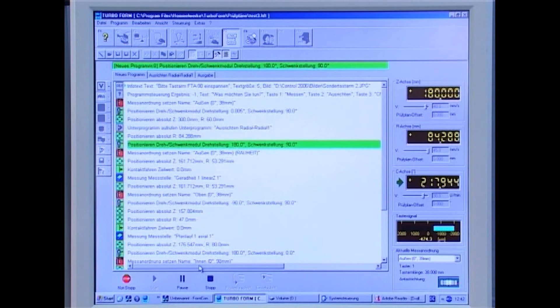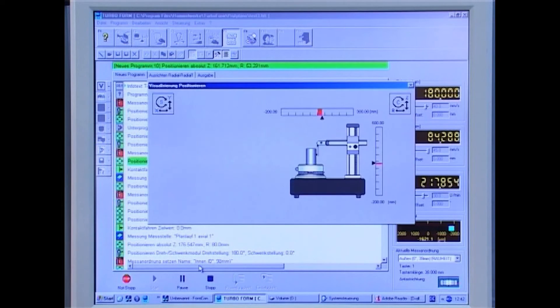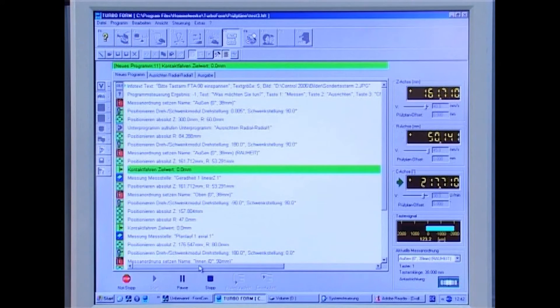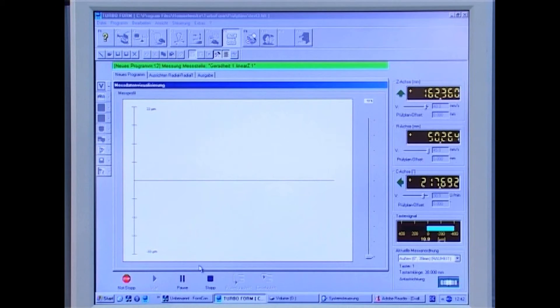The Hommelwerke software Turboform allows evaluation and display of all form and position parameters plus the assessment of all common roughness, profile, waviness and twist parameters.